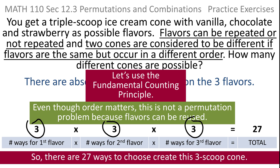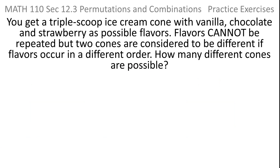Think about that carefully — why it's not a permutation, and why it's three times three times three. The actual mechanics of calculation are easy. The difficult part, if there is a difficult part, is knowing what to do. To help with that, let's actually do a variation on this problem.